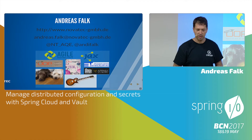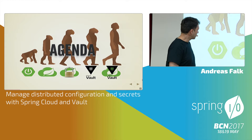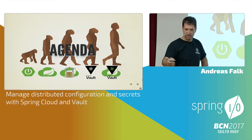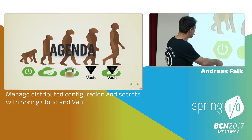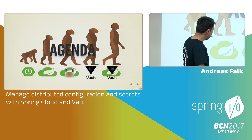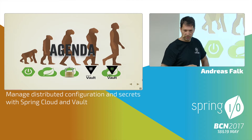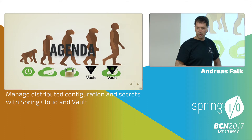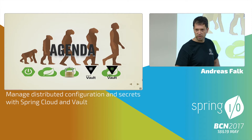Our agenda today is an evolution on security — getting from local redundant property files with clear text passwords and sensitive data, then using distributed configuration at the first stage, then going further with encrypted distributed configuration values, then one step better using a project called Vault (I'll give an introduction to that), and the final stage will be a combination of all using the Spring Cloud Config project, which is quite new — released some weeks before the Spring IO conference.